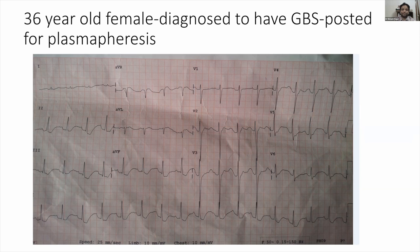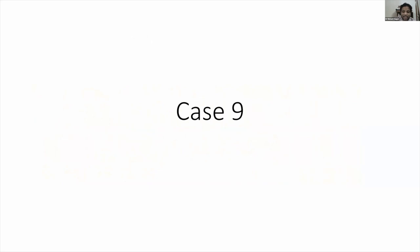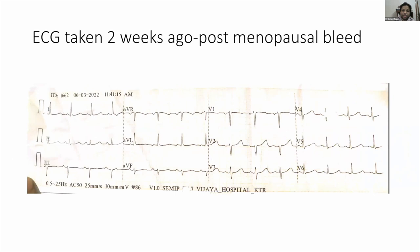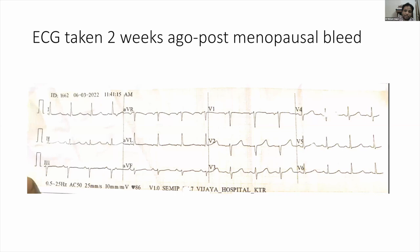Case nine, the last case of the day — one I actually missed. This is a 52-year-old female who is critically ill. An ECG was taken two weeks ago for a postmenopausal bleed when she visited gynecology. Now she is critically ill, and I have a comparison ECG. I expect you to make the diagnosis from the ECG comparison.